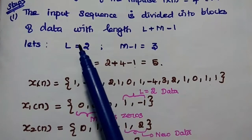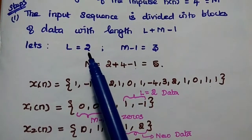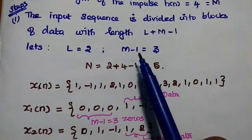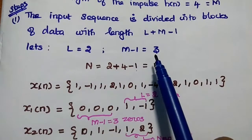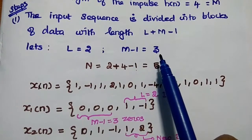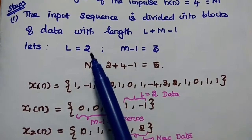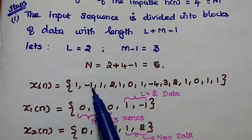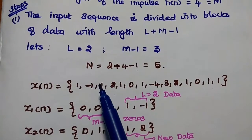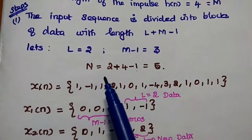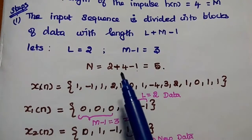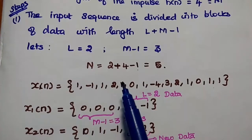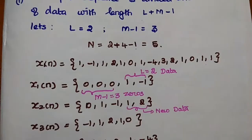So if M minus 1 is equal to 3, then we can take L equal to 2, because we have to create a block with maximum length of 5. Only then can we obtain the accurate result.